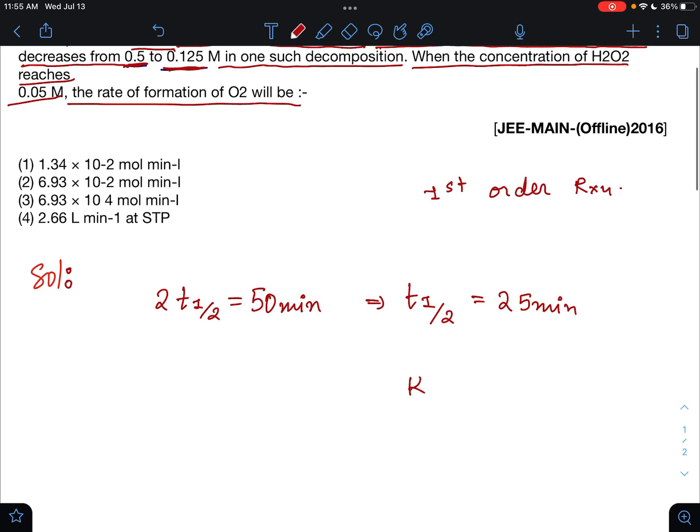We will get k equals ln 2 by 25. Therefore, 25 equals ln 2 by k.